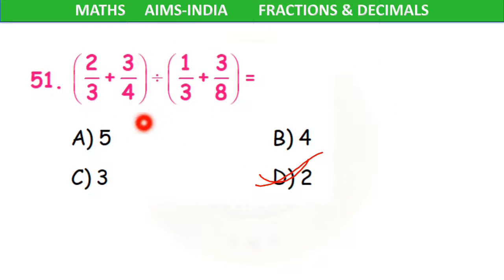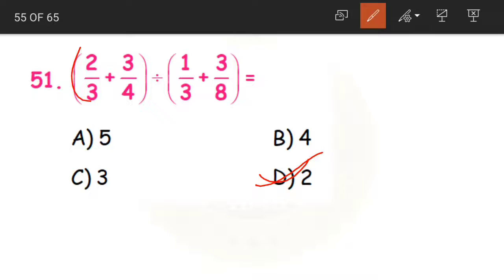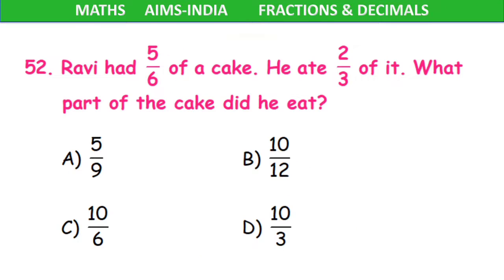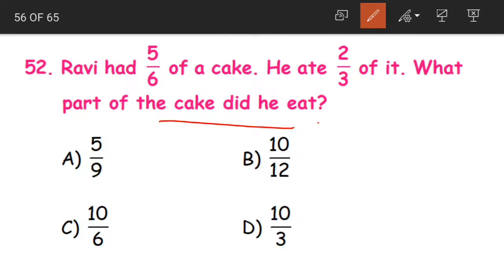Whenever such brackets are given, make sure you do that part first and then do whatever is outside the brackets. Next question 52. Ravi had 5/6 of a cake. He ate 2/3 of it. What part of the cake did he eat? He ate 2/3 of 5/6.